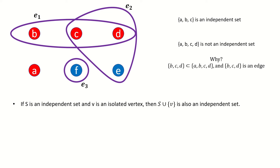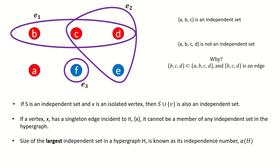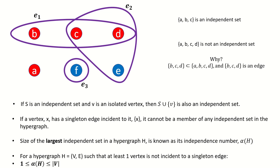Notice that if we have an independent set S, we can add an isolated vertex V and obtain another independent set. Also, vertices incident to a singleton edge or loop, such as vertex F in this hypergraph, cannot be included in any independent set. The size of the largest independent set in a hypergraph H is known as the independence number of H, denoted by alpha of H. For hypergraphs with at least one vertex not contained in a singleton edge, the independence number is at least one and at most equal to the number of vertices in the hypergraph.